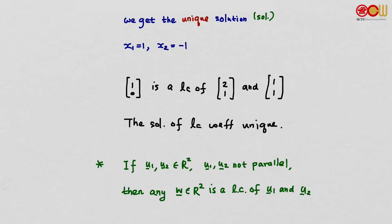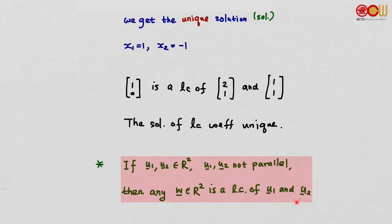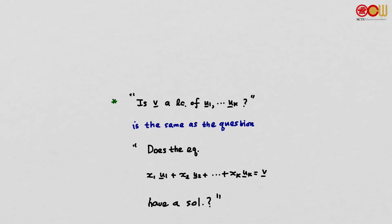More generally, if we have two vectors u1 and u2 in R2 that are not parallel, then any vector w in R2 is a linear combination of these two vectors.